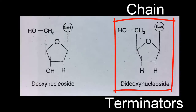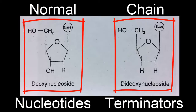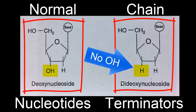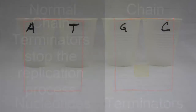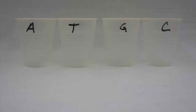Chain terminators are different from normal nucleotides because they lack an OH group, which allows another nucleotide to be bonded to it. When a chain terminator is placed into a replicating strand it terminates the replication process, hence the name chain terminators.